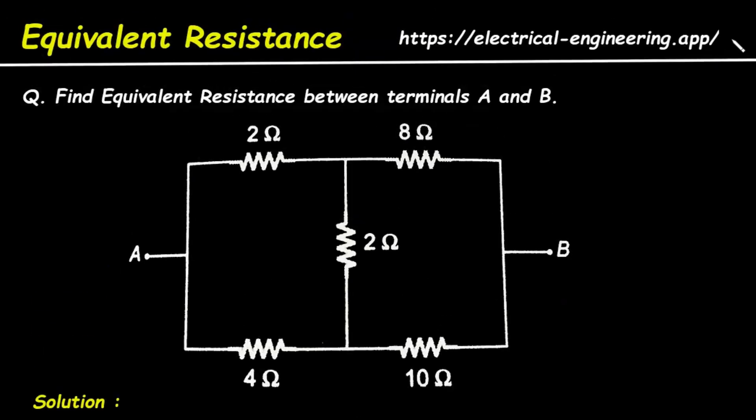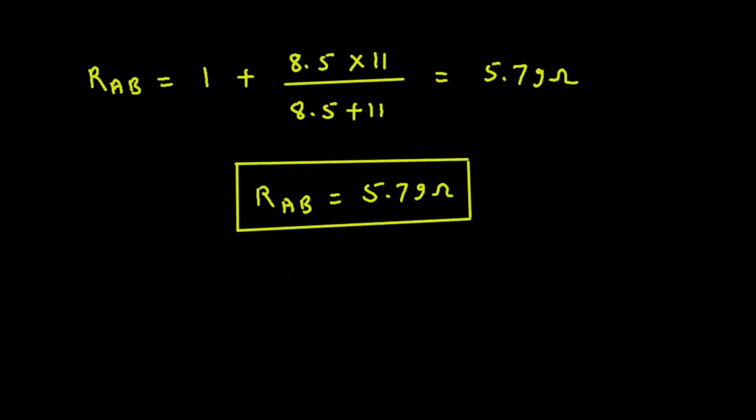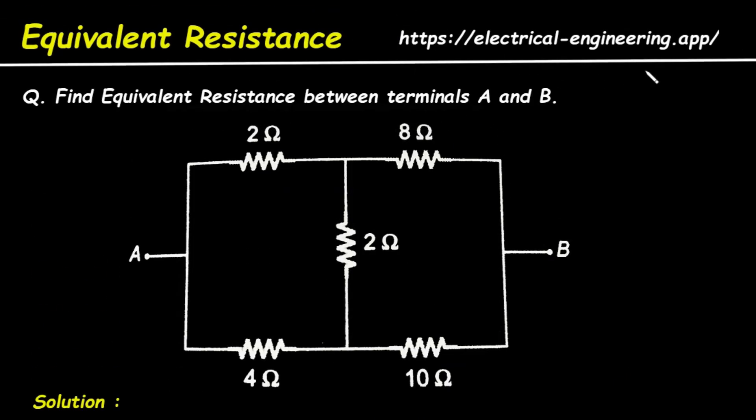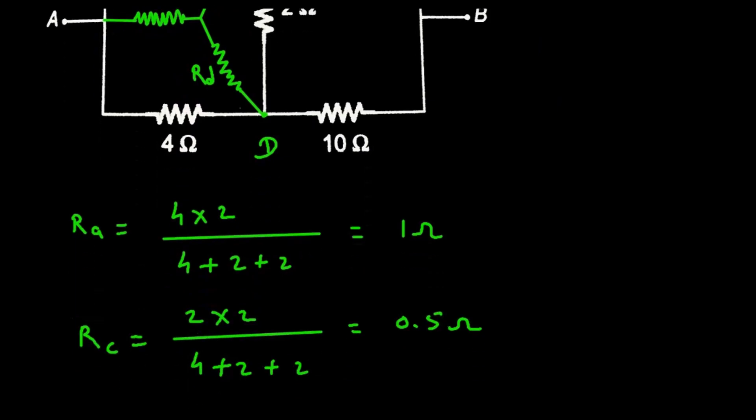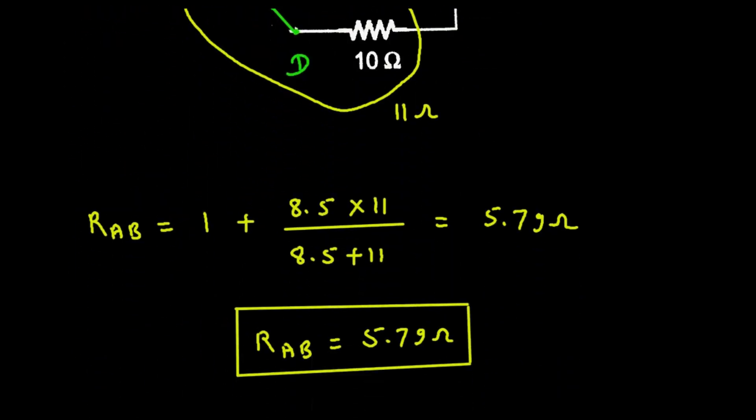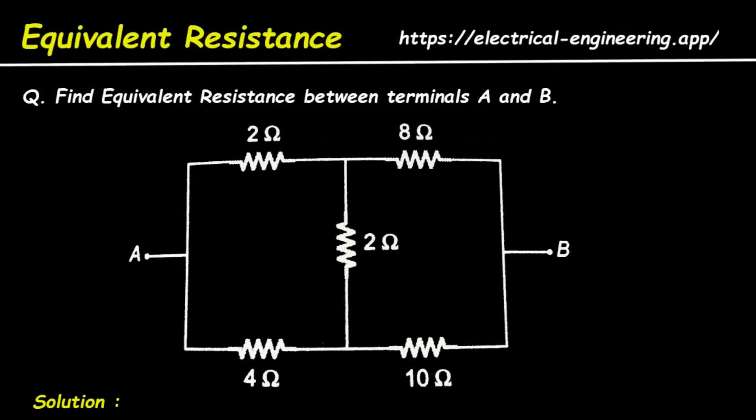So R AB is equal to 5.79 ohm. So this is how we can solve these types of networks. And this is the example based on star to delta conversion. And since this bridge, this Wheatstone bridge was not balanced, that's why we have solved it like this. So don't forget to like, share and subscribe to this channel. And thanks for watching.